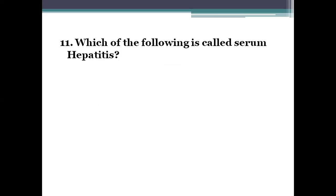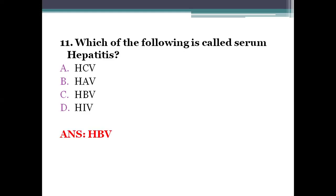Next question: which of the following is called serum hepatitis? Option A, HCV (hepatitis C virus). Option B, HAV (hepatitis A virus). Option C, HBV (hepatitis B virus). Option D, HIV (human immunodeficiency virus). The right answer is option C, HBV — hepatitis B virus is called serum hepatitis.